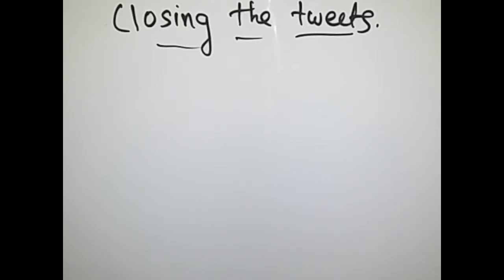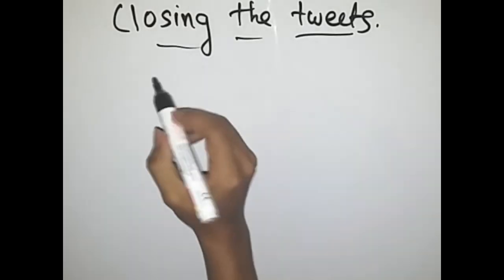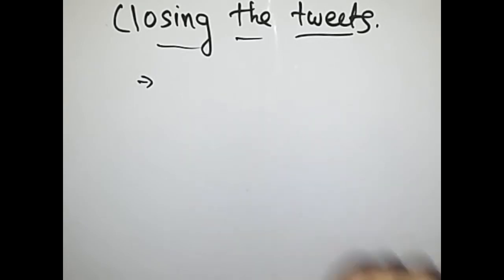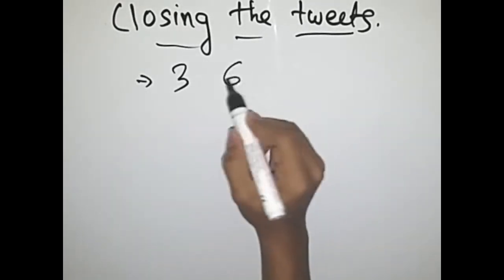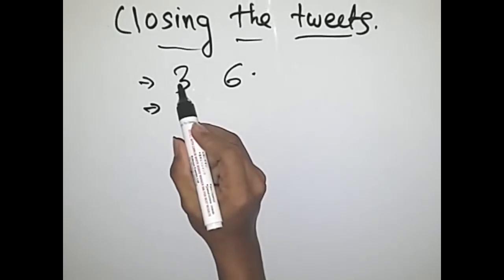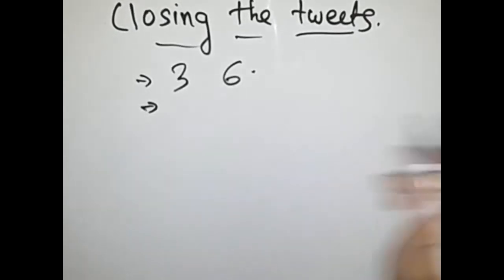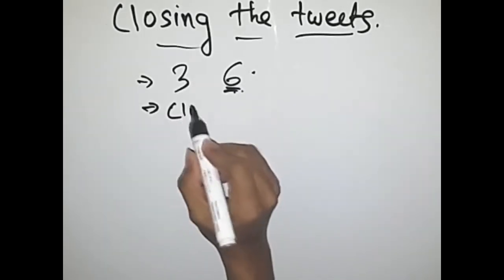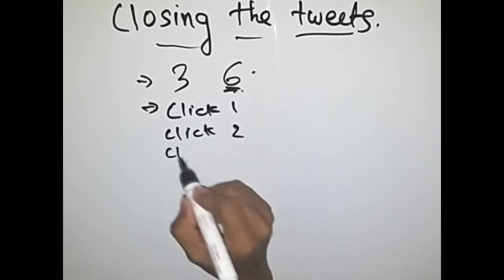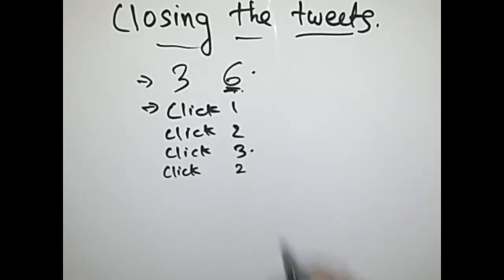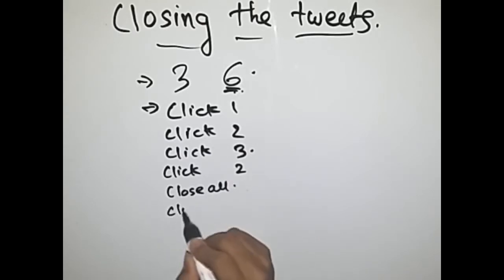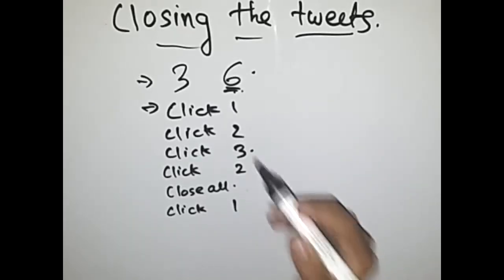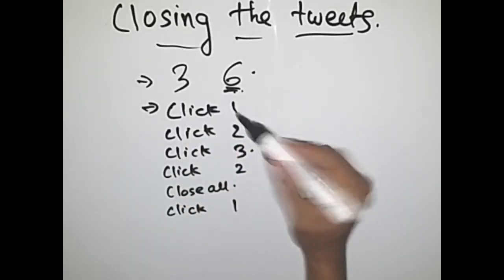This problem is quite easy and doesn't really belong to the medium section — we can solve it by normal ways. In this problem we have two inputs. We'll take the same example from the problem itself: three and six. The three indicates we have three tweets — tweet number one, two, and three. There will be six inputs that will be clicks.